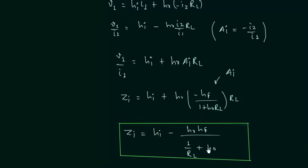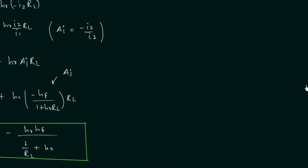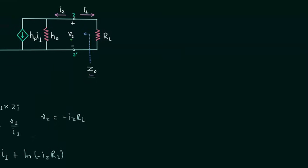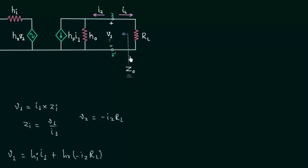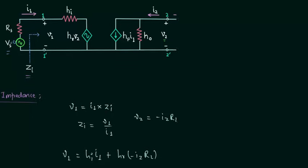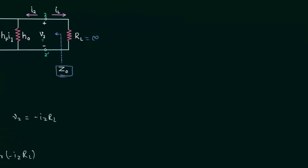The next part of this lecture is the derivation of output impedance. The derivation of output impedance is a little bit different compared to the derivation of input impedance. The output impedance is the impedance seen from the terminals 2 and 2'. To calculate the output impedance Zo, we need to short circuit the input source Vs and open circuit the output terminal. This means RL must be infinity and Vs must be zero.